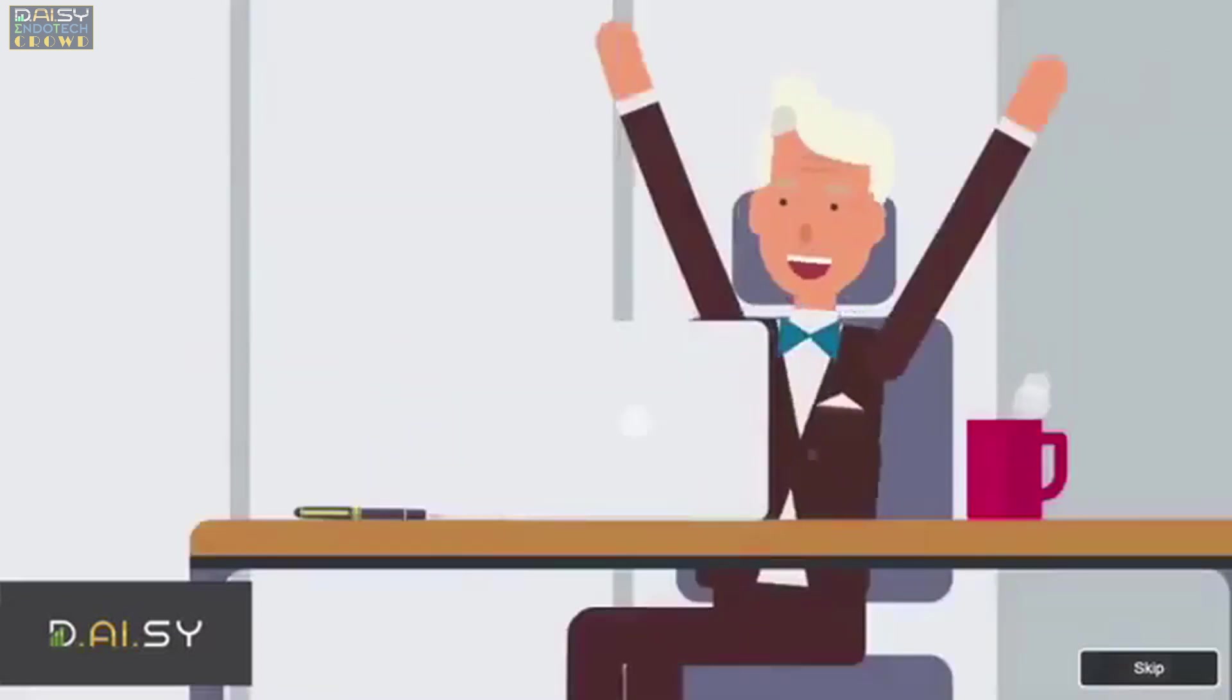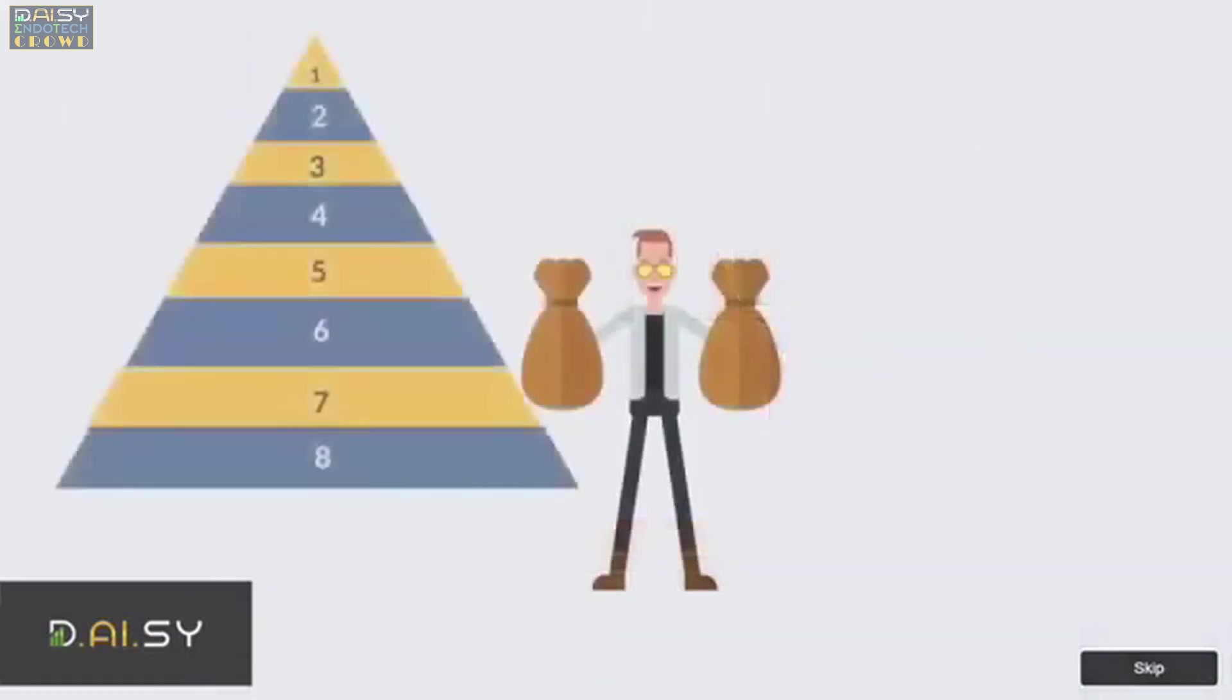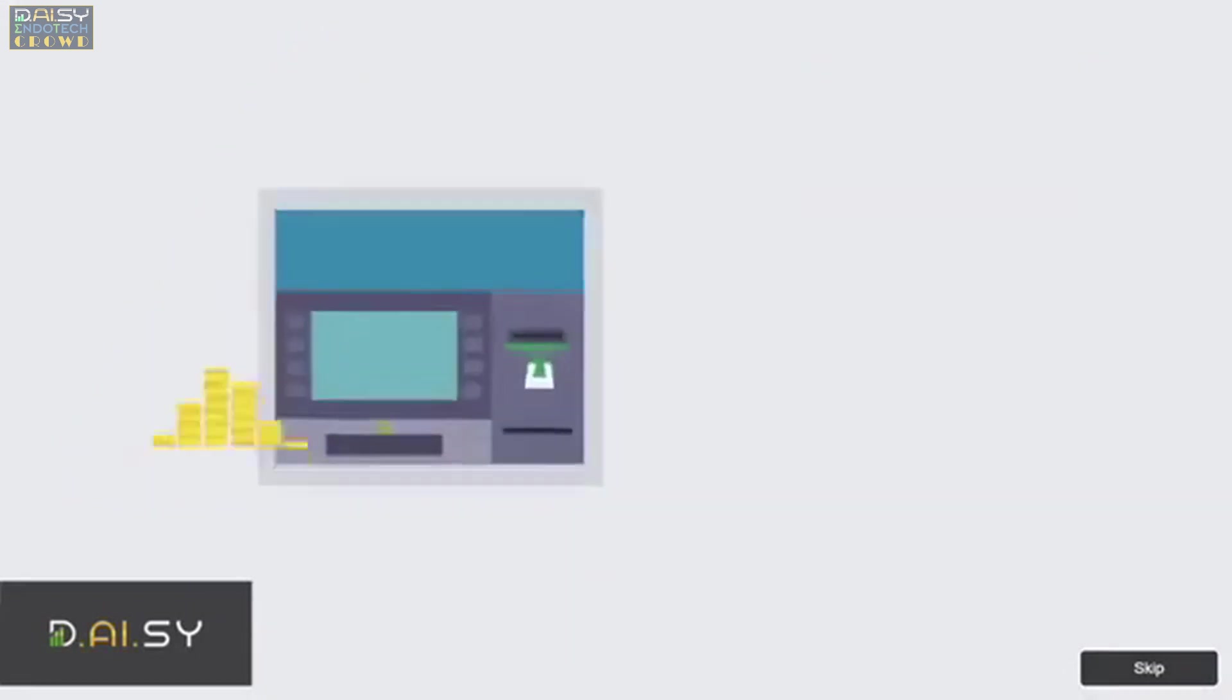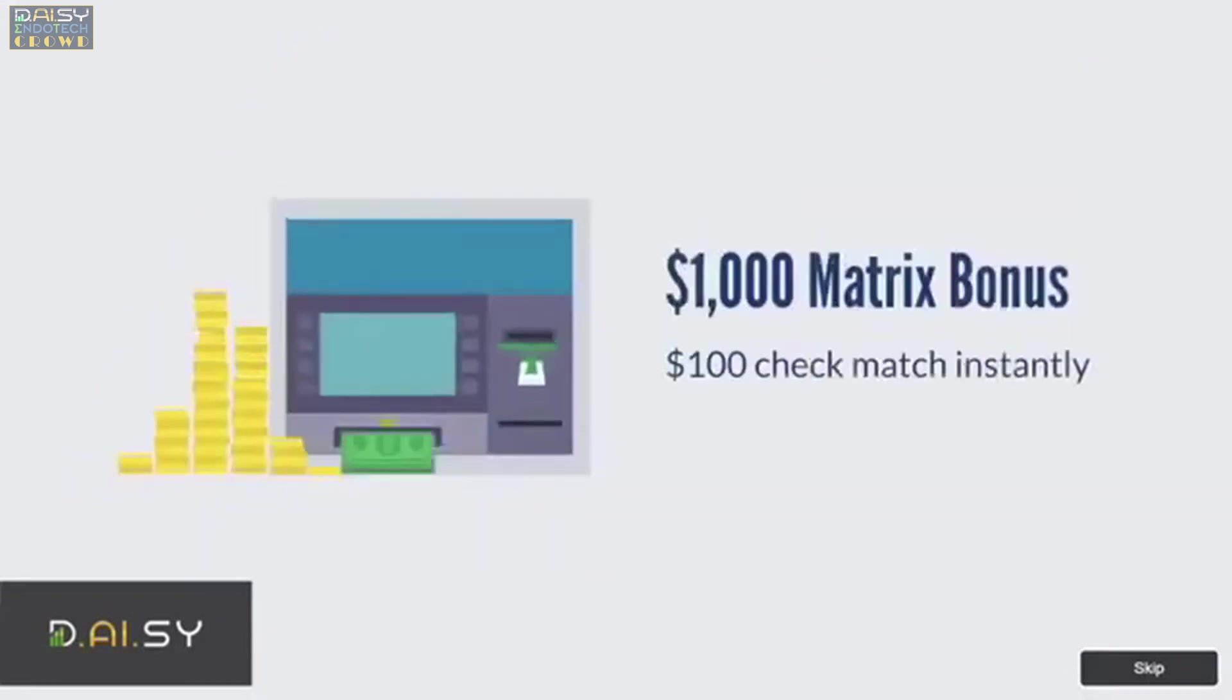So if you have eight contribution tiers and five generations unlocked, you can be rewarded matrix check matching bonuses on these eight matrices five generations deep. So if your personal referral gets a $1,000 matrix bonus, you will be rewarded $100 check match instantly.